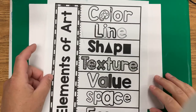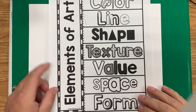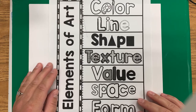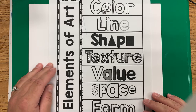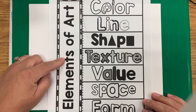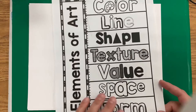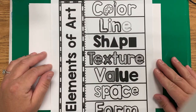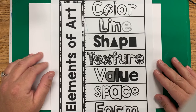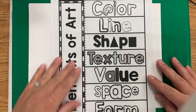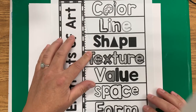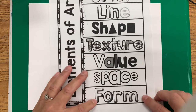Hi everybody! Today we're going to start talking about the elements of art. The elements of art are what we use when we are creating an artwork. If you don't have at least one element of art, you just have a blank sheet of paper. Some things you can use include colors, lines, shapes, textures, value, space, and forms.